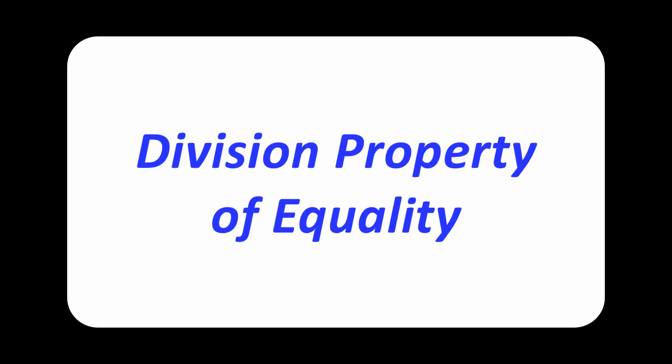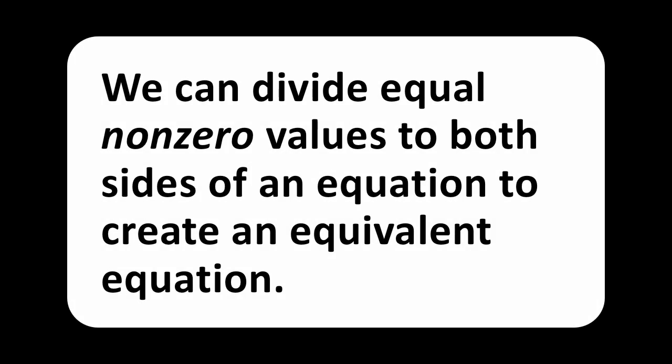Division property of equality: we can divide equal non-zero values to both sides of an equation to create an equivalent equation. Let me take a moment to clarify this rule even further. You are allowed to divide both sides of an equation by any number you want except for zero. Division by zero is undefined. It's not allowed. So don't do it.